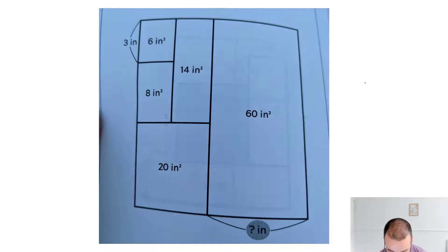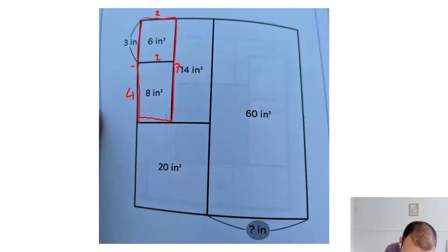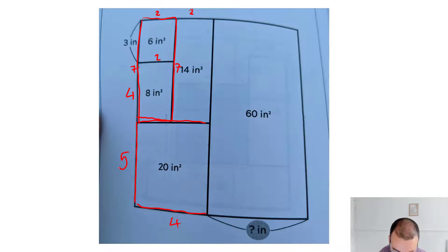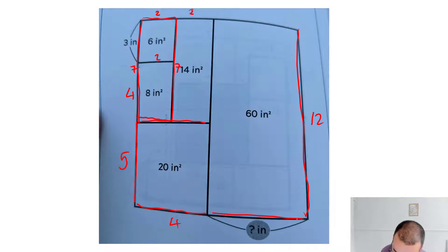Three times what is six? That's a two. Two times what is eight? That's a four. This shape altogether adds up to 14, and you can see it's identical to this shape here because it shares this length of seven. So this length up here has to be two as well. This whole length, which is also down here, is four, which means that this length has to be five. We know this whole length is 12, because it's five plus four plus three. And to get to 60, this length has to be five, because 12 times five is 60. So the answer is five.